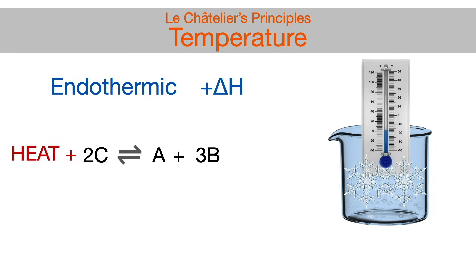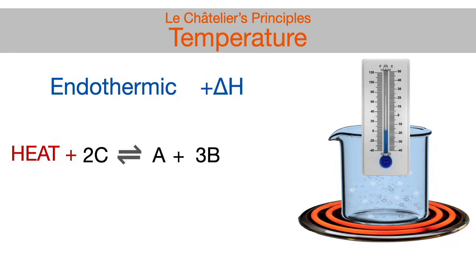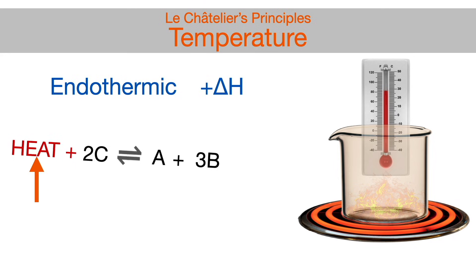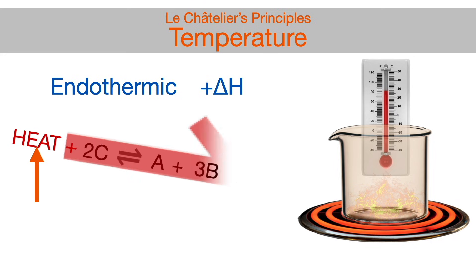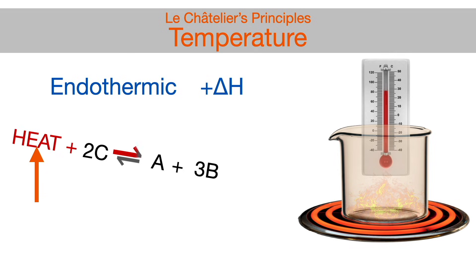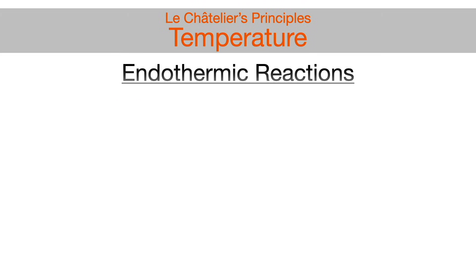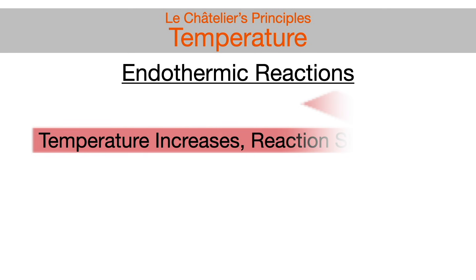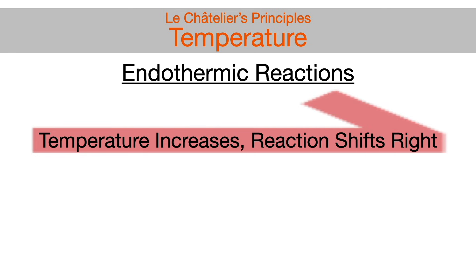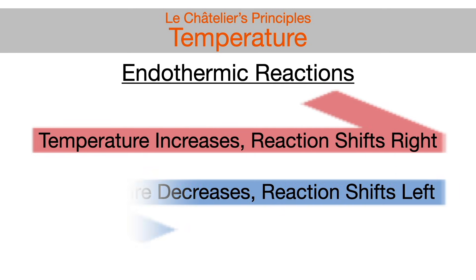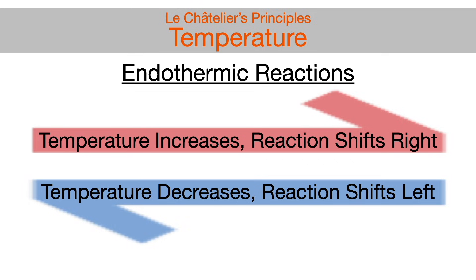But if heat is increased by increasing the surrounding temperature of the reaction environment, the reaction will shift to the right toward products, meaning the forward reaction will be favored and occur. Basically, increasing the temperature is fueling or catalyzing the reaction with heat. So, for endothermic reactions, increasing the temperature will shift the reaction to the right, and decreasing temperature will shift the reaction to the left.